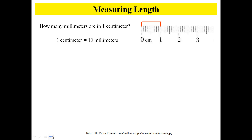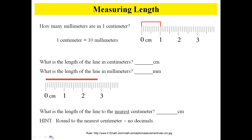As you look at millimeters, you're getting finer and finer divisions, so you can get a little more precise in your measurements. Now let's look at some examples. What is the length of the line below in centimeters? Looking at it, we see 2, 2.5 — it looks like about 2.8 centimeters.